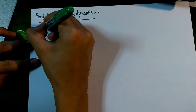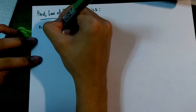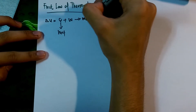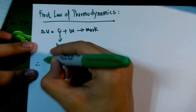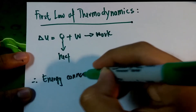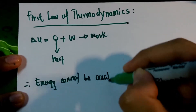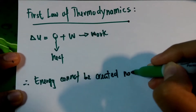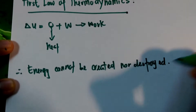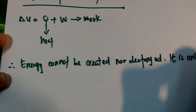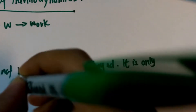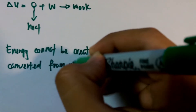Our experiment today is based on the first law of thermodynamics. The general equation for the first law of thermodynamics is delta U equals Q plus W, where Q is heat and W is work. The definition for the first law of thermodynamics is energy cannot be created nor destroyed — it is only converted from one form to another.